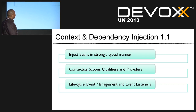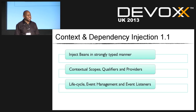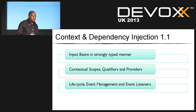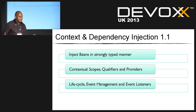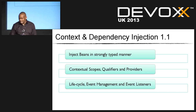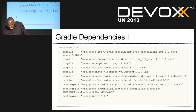Contexts and Dependency Injection — how many people know CDI? It's a way of injecting beans into another bean. It's strongly typed, and the benefits are that all your beans have contextual conversation scope. You can have qualifiers, producers, and also lifecycle events.